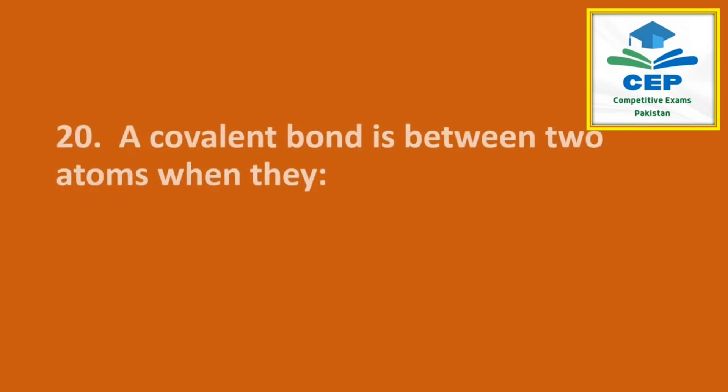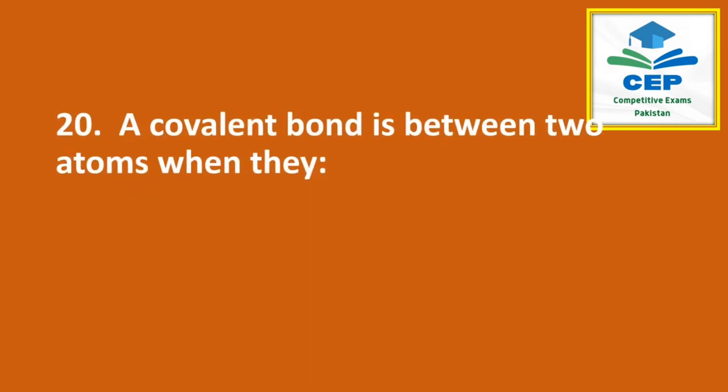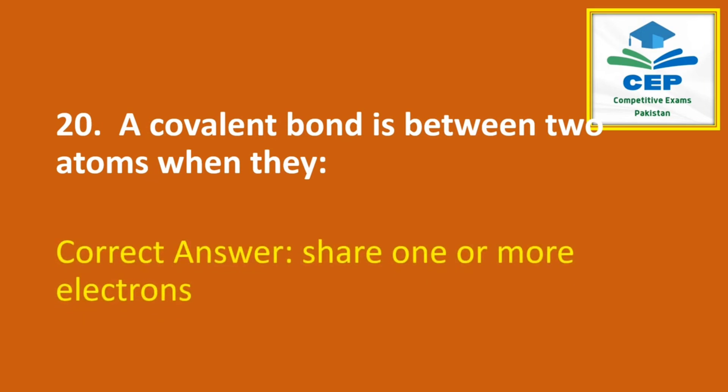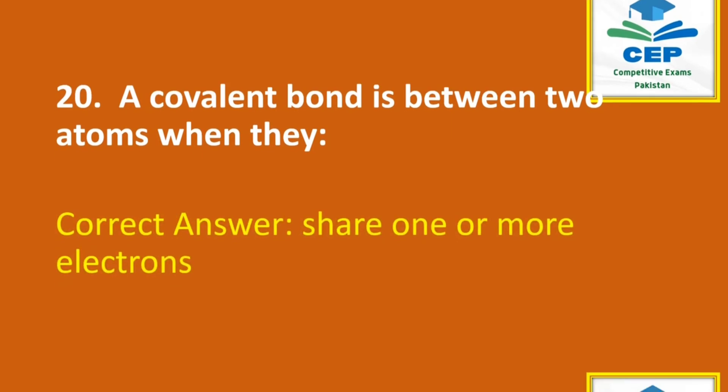The last question of GSA 2021: a covalent bond is formed between two atoms when they share one or more electrons.